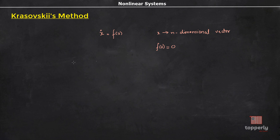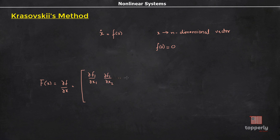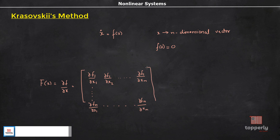In that case, the Jacobian matrix for the system is given by F(x) = ∂f/∂x, with entries ∂f₁/∂x₁, ∂f₁/∂x₂, and so on up to ∂f₁/∂xₙ. This is the Jacobian matrix for the system.